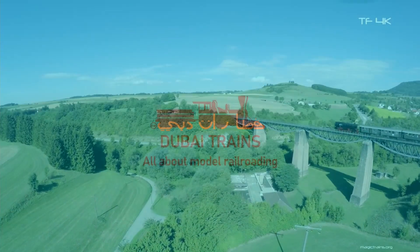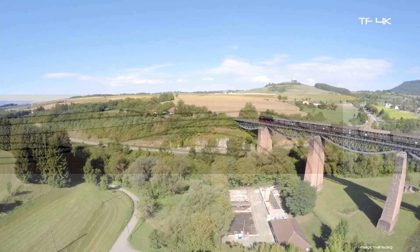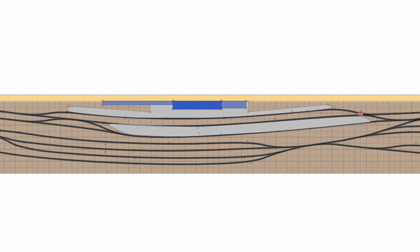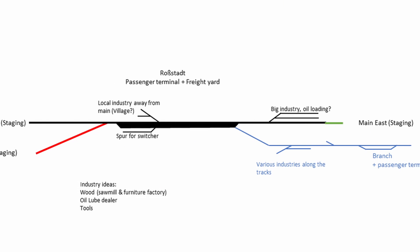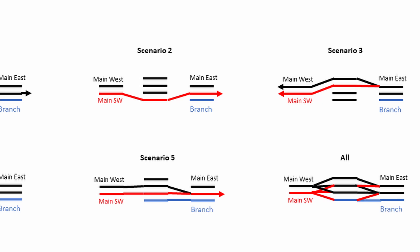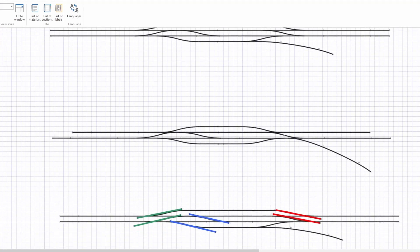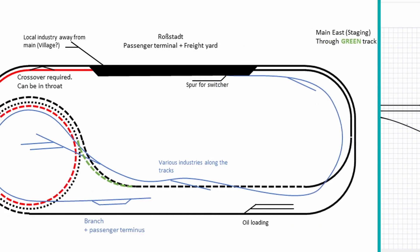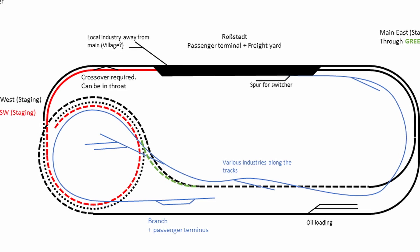Hello and welcome to my channel and welcome to this two-part video series on a very special layout design. In this first part we're going to look at the design of the passenger terminal and adjacent freight yard. I chose to dedicate an entire video just on this design as I want to showcase the process that we went through to come to exactly this design. I will explain what is the purpose of each and every turnout and how we came to this track arrangement. In part two we're going to look at the rest of the 3-deck layout design.